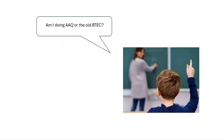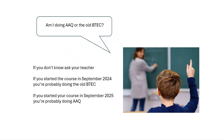You need to ask your teacher whether you're doing the AAQ or the old BTEC. If you started the course in 2024, you're probably doing the old BTEC — the Extended National — and you're currently in your second year. If you started in 2025, you're most likely doing the AAQ, but check with your teacher to be sure.